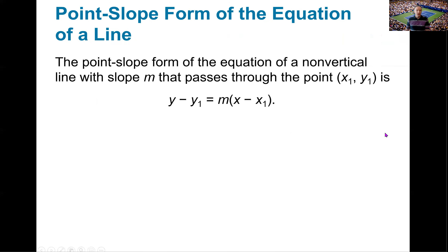Now let's say we wanted to find the equation of a line. This formula is so beneficial — it's called the point-slope formula. If you know a slope, which we call m, and you know a point (x₁, y₁), then the equation of the line with that given point and slope is: y minus y₁ equals m times (x minus x₁). Let's see that in action.